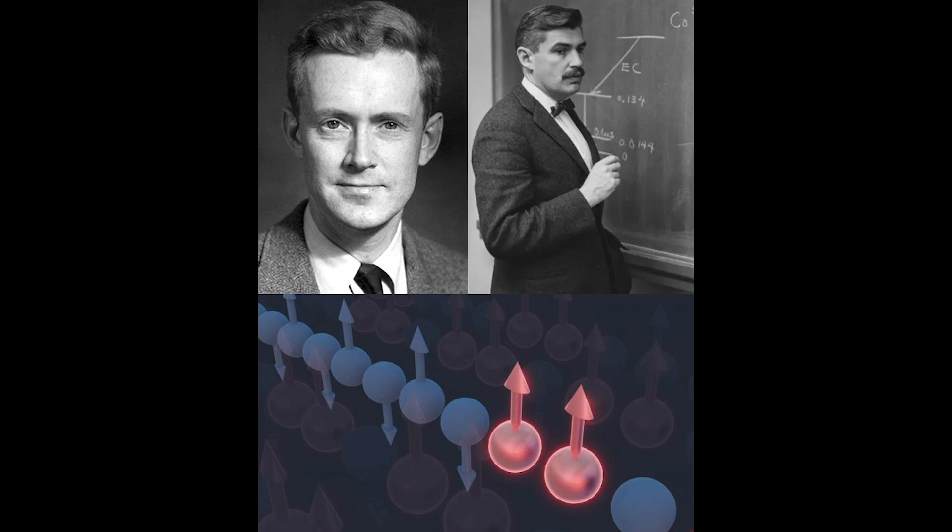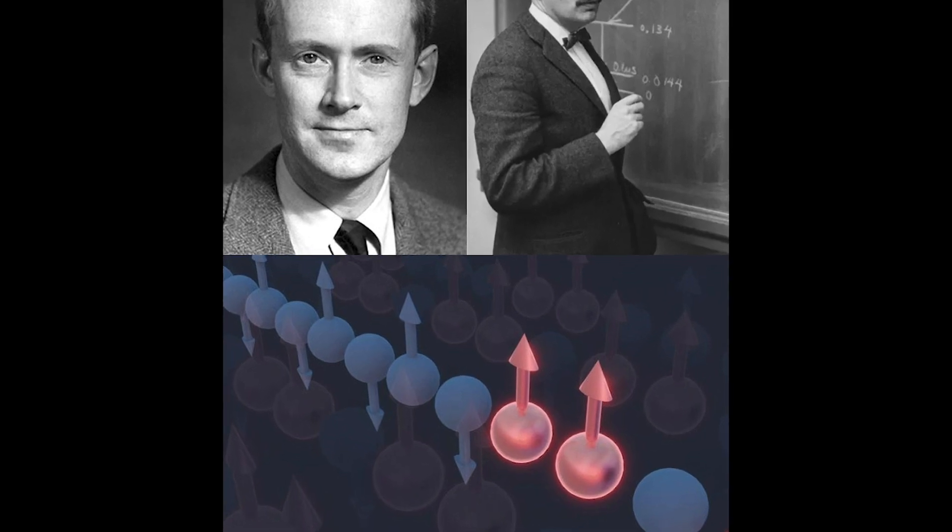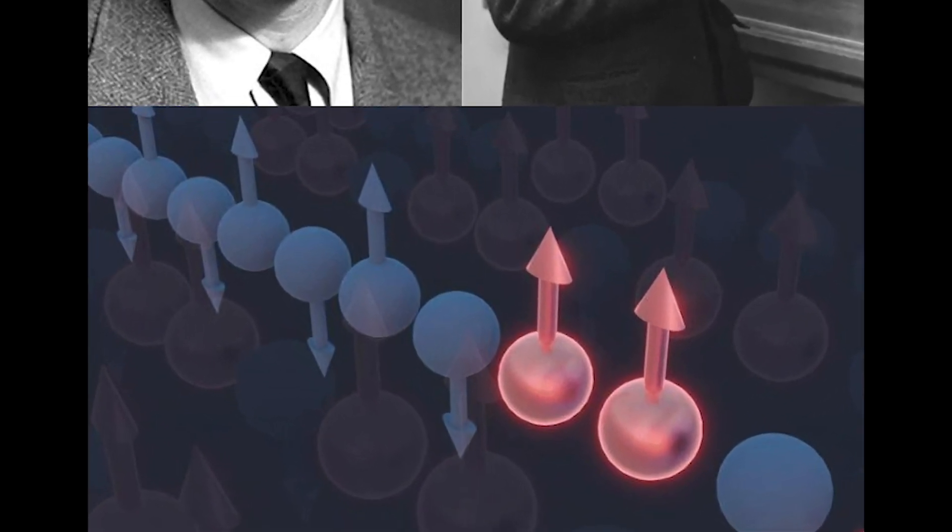But in 1951, scientists were able to show that a nuclear spin system exhibits a negative Kelvin temperature.